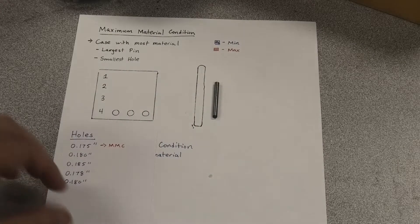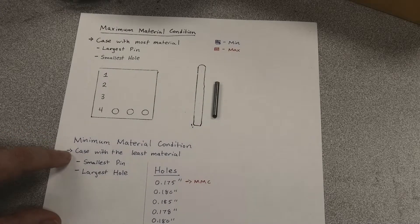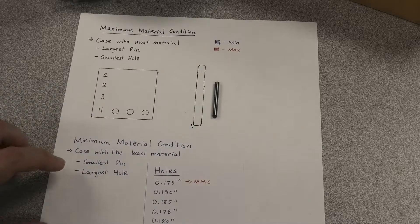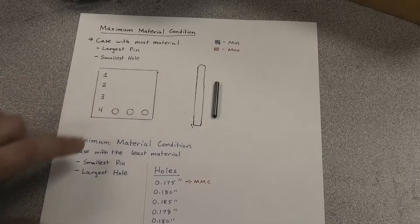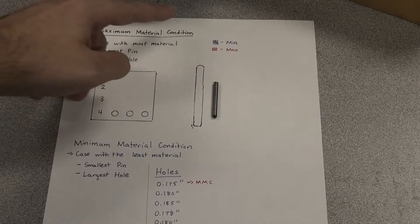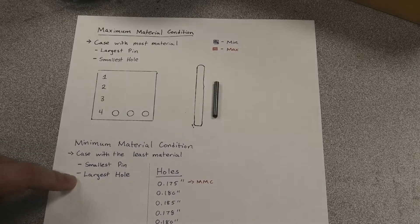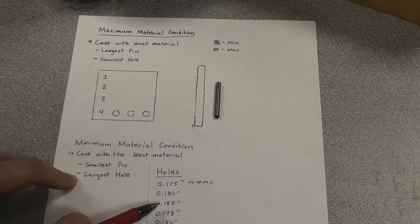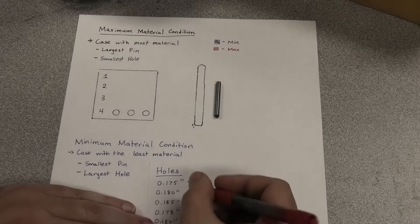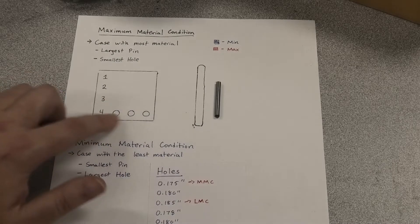Now on the other side, if we're talking about the least or the minimum material condition — also called LMC, for least material condition — that's going to be the case with the least material, which means it's going to be the largest hole. Looking here, the largest hole that I measured was 185 thou, so 0.185 is going to be our least material condition for the series of holes I measured.